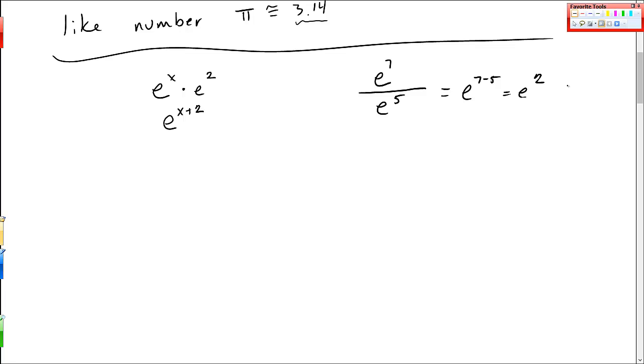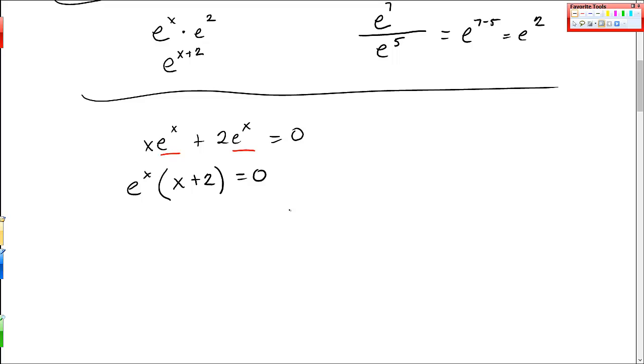Another thing that will happen is if you have things that are shared, you could factor e out. So let's say I have x times e to the x plus 2 e to the x. This piece here, e to the x, is shared between them and I can factor that out. Let's say this is equal, let's say I'm solving an equation. And I can factor this out and get e to the x times x plus 2 is equal to 0. And then I can still use that 0 factor property and say, well, that's e to the x equals 0, which never happens. Or x plus 2 equals 0, and a solution to this is x is equal to negative 2. So all of those things that you know for other numbers still hold for e. It's just a particular shorthand notation for this number.